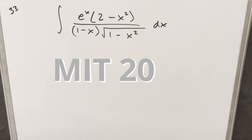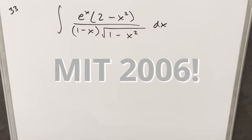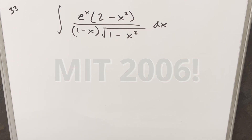We have here another integral from the MIT Integration Bee 2006, number 33. We have the integral of e to the x times 2 minus x squared over 1 minus x squared dx.